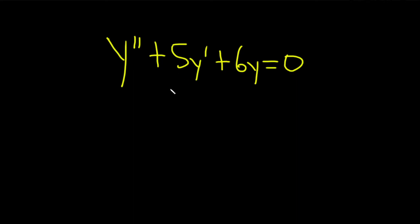Okay, let's go ahead and solve this differential equation. We have y double prime plus 5y prime plus 6y equals 0. So this is a linear differential equation with constant coefficients, and it's homogeneous because it's equal to 0.